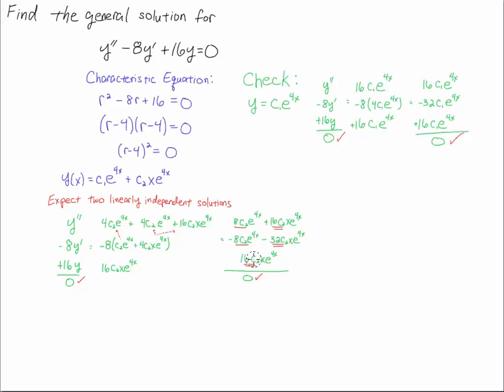And then if I add up 16 plus 16 gives me minus 32, 16 plus 16 gives me positive 32 minus 32 gives us 0. So check, this term here, the c2x e to the 4x, is indeed a solution to the ODE.